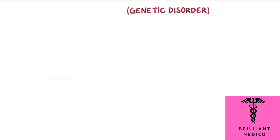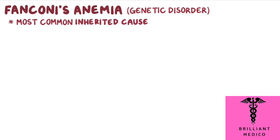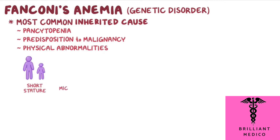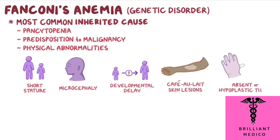The most common genetic disorder associated with aplastic anemia is Fanconi's anemia. Fanconi's anemia is the most common inherited cause of aplastic anemia, characterized by pancytopenia, predisposition to malignancy, and physical abnormalities like short stature, microcephaly or a small head, developmental delay, cafe au lait skin lesions, and absent or hypoplastic thumbs.